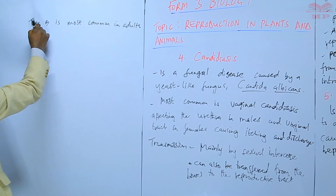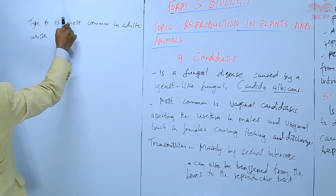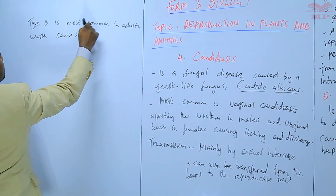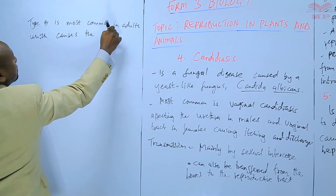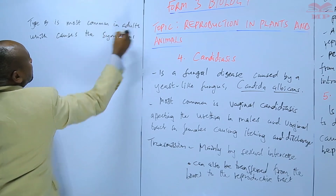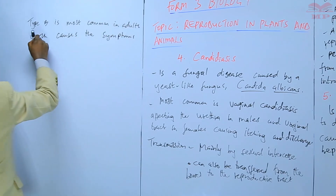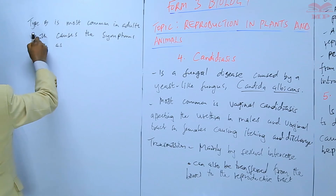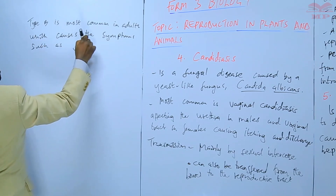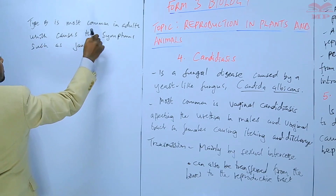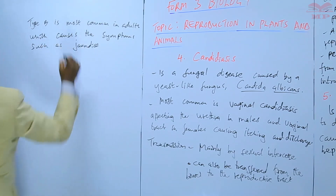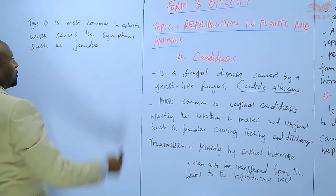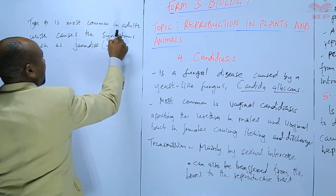Type B causes symptoms such as jaundice — the yellowing of the skin — which is one of the symptoms that may be observed.